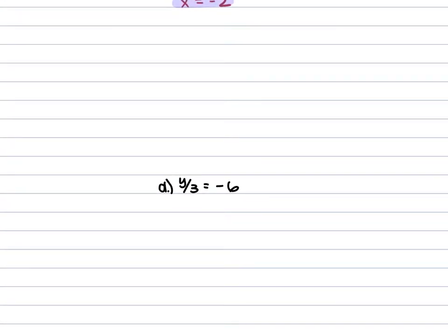For D, we have y over 3 is equal to negative 6. We want to get y by itself, and right now it's being divided by 3. So we multiply each side by 3. The 3s cancel and we have y is equal to negative 18.